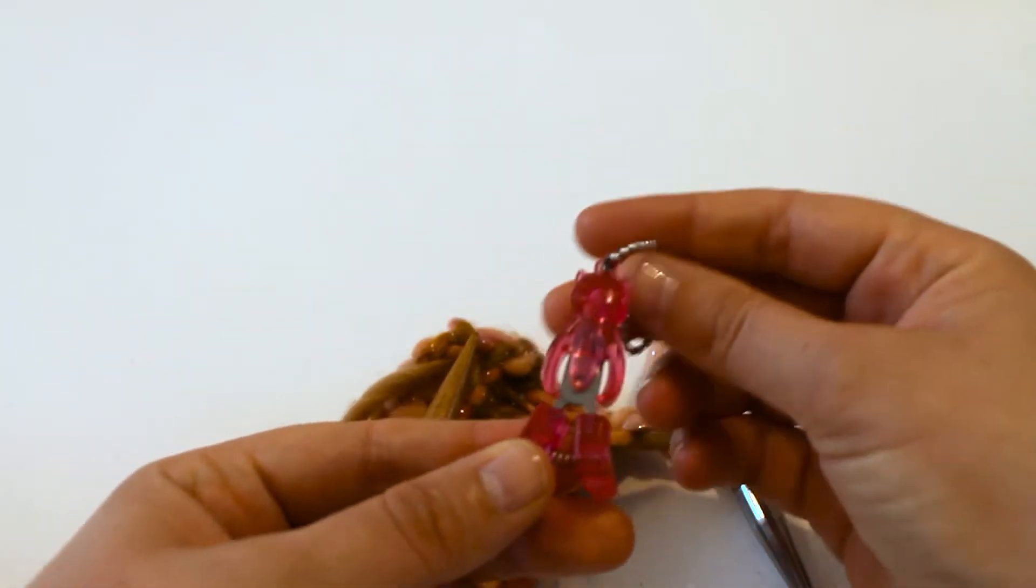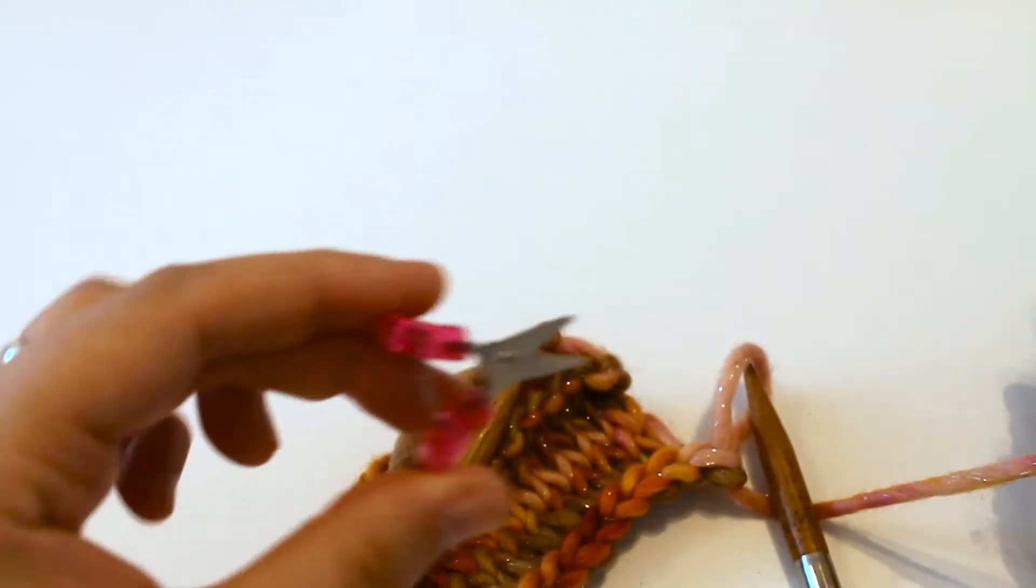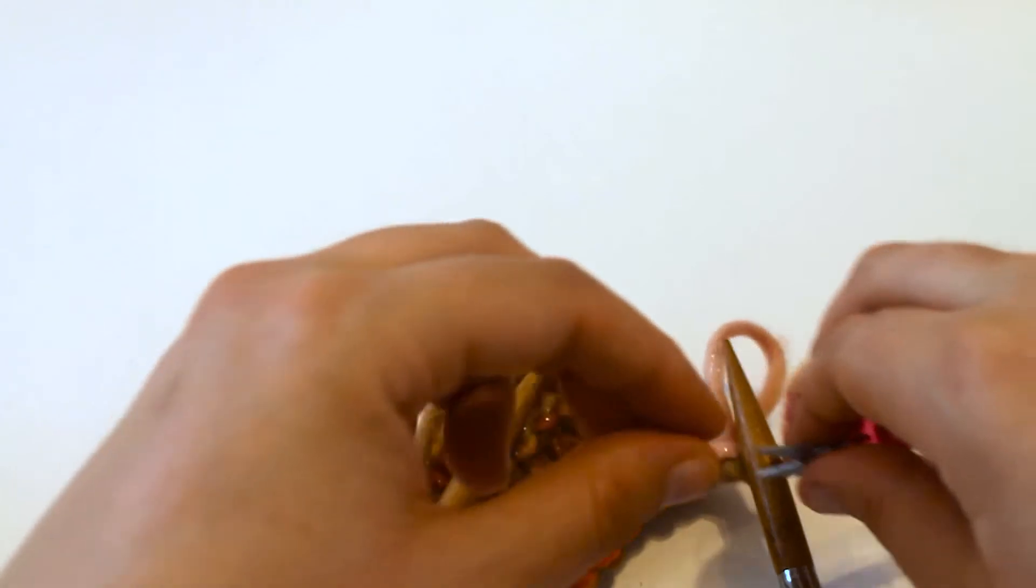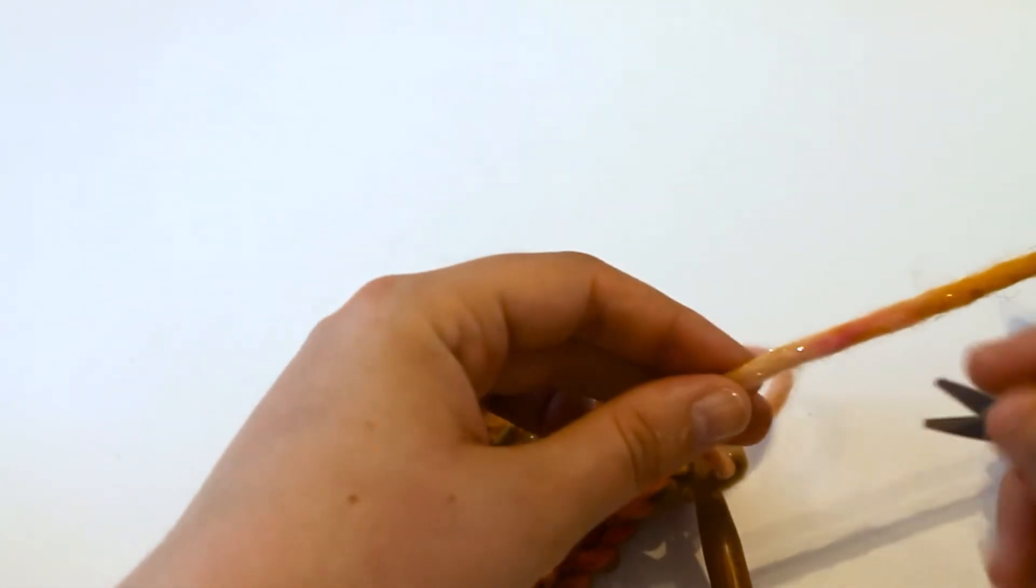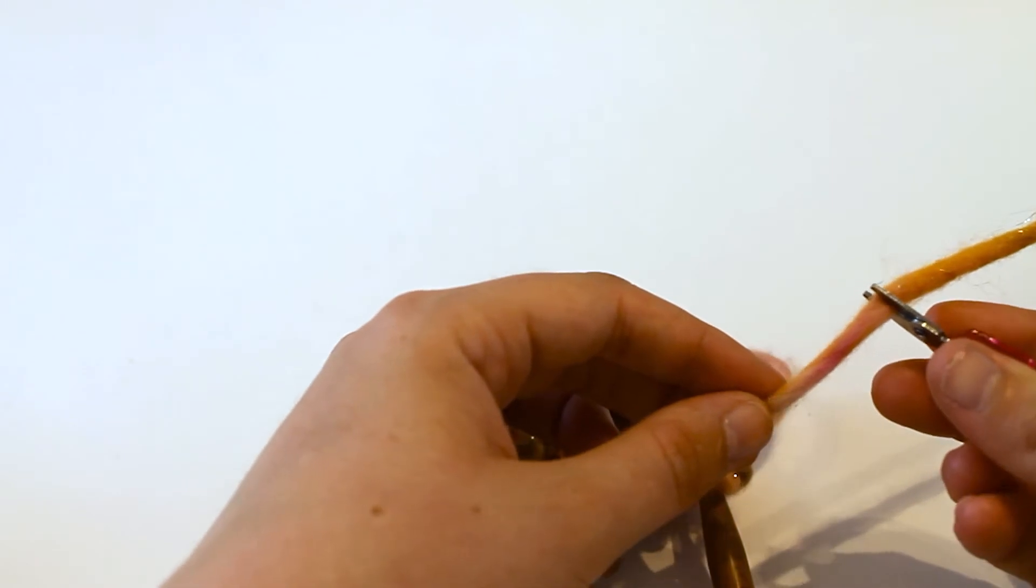To cut the yarn I've used the HiyaHiya Kitty Snips. They're a little set of scissors that will go onto any keyring. Very handy if you are a traveling knitter. So chop through.